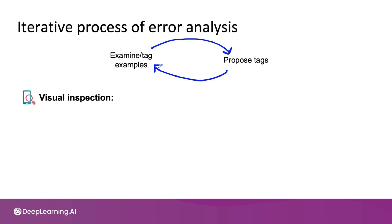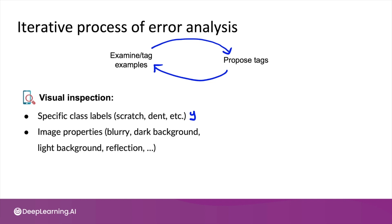Let me step through a few other examples of what such tags could be. Take visual inspection — the problem of finding defects in smartphones. Some tags could be specific class labels, such as 'does this phone have a scratch?' or 'does it have a dent?' Some tags could be image properties: is this picture blurry? Is it against a dark or light background? Is there an unwanted reflection? Tags could also come from metadata — what is the phone model, what is the factory, which manufacturing line captured the image? The goal is to come up with a few categories where you could productively improve the algorithm.